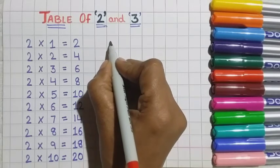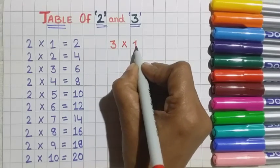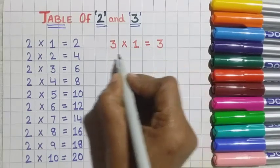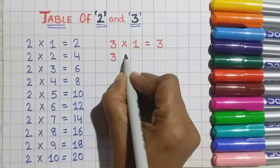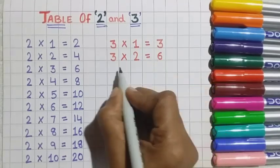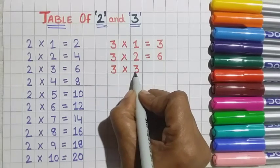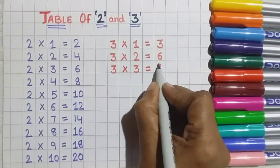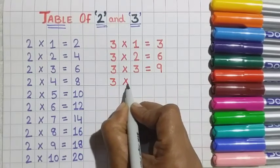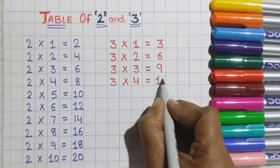Write table of 3. Three 1s are 3. Three 2s are 6. Three 3s are 9. Three 4s are 12.